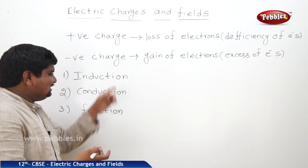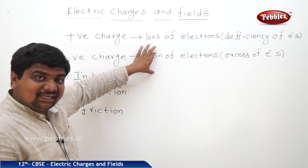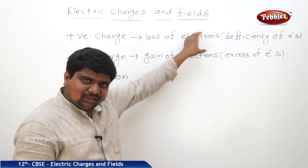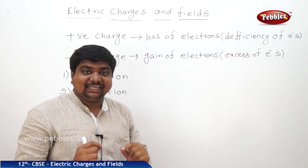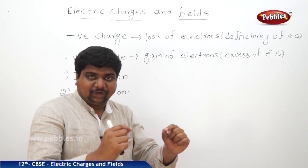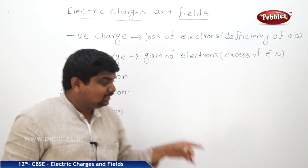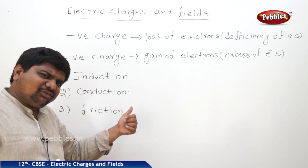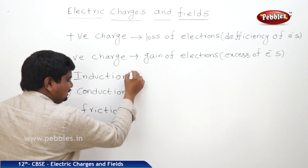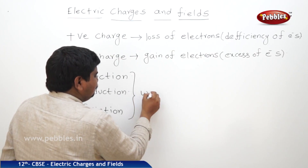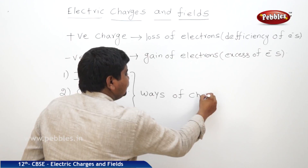Why are we dealing with these three topics? See — the definitions involve loss of electrons or gain of electrons. There is a process called electrification, or charging a body. These three are different ways of charging a body. In any one of these three ways, loss or gain of electrons is possible — that's why they are collectively called ways of charging a body.